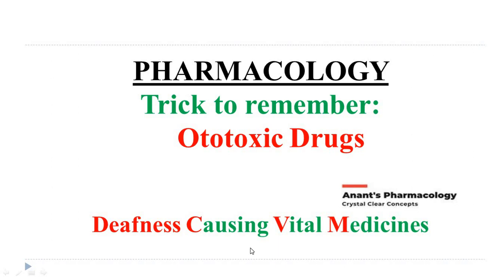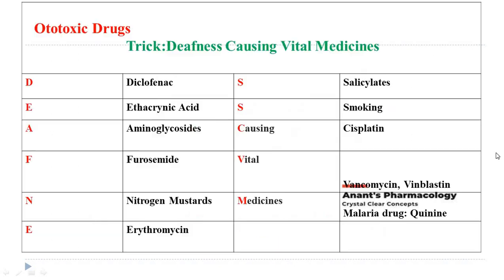If you say it 4-5 times, write it, then you will automatically remember it. Deepness causing vital medicine. Now, what do the letters indicate? D for diclofenac, E for ethacrinic acid, A stands for aminoglycosides.